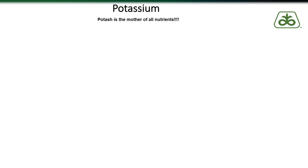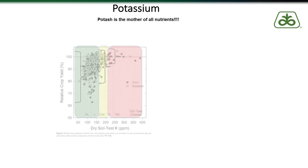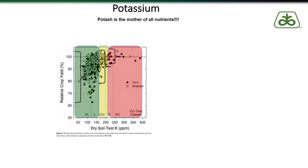Let's go ahead and take a look at a chart that has been released from Iowa State. The green area represents soil tests that have come back in the very low to low categories. The yellow represents optimal levels according to Iowa State recommendations, and the red represents very high and high.